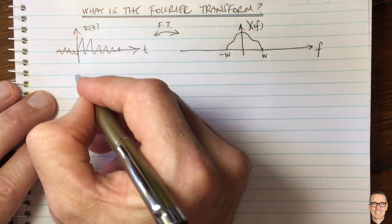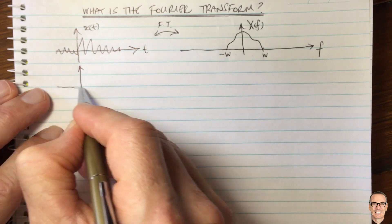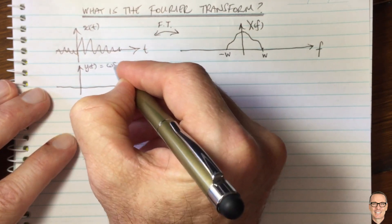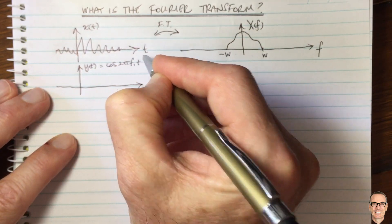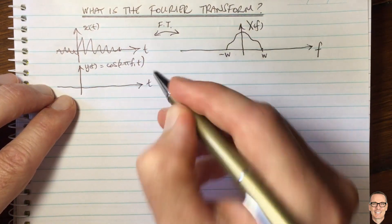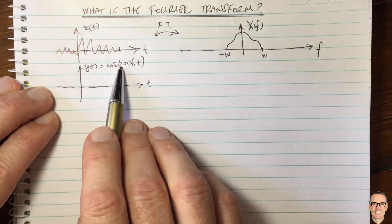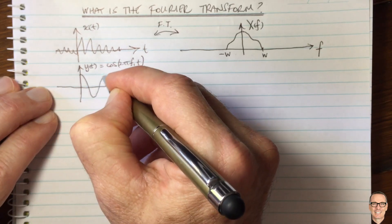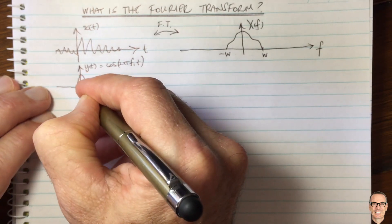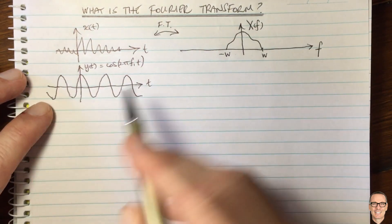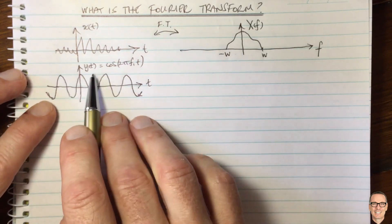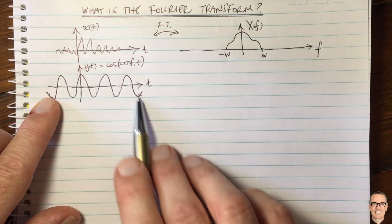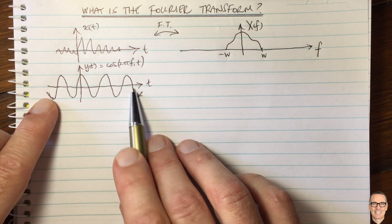Let's try to intuitively understand a bit more about what we mean by the frequency domain. Here's an example of a cosine waveform. Let's say y(t) = cos(2π f₁ t) — that's the waveform I can write a mathematical equation down for. I can plot this: the cosine waveform starts at one when time equals zero, oscillates like this, and of course goes into negative time as well. This waveform has one frequency component.